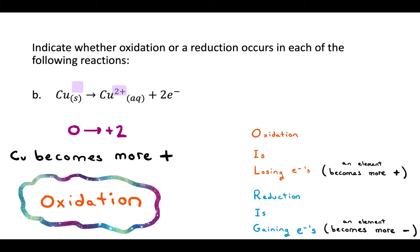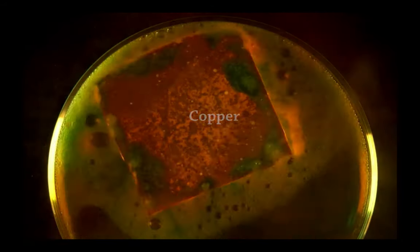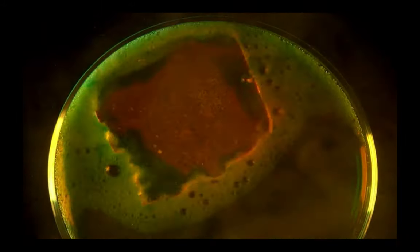What would this look like? We start with solid copper — an orange-brown metal. After it loses its electrons, it suddenly starts dissolving in water and becomes aqueous. The 2+ charge allows it to dissolve in water. So we started with a metal, and after it's all oxidized, it looks like we just have a liquid — there's no metal there at all, even though all those copper atoms are still there.